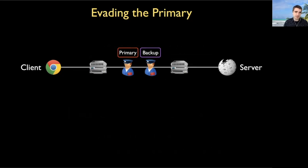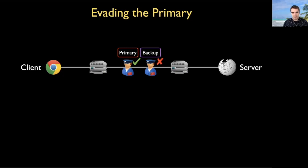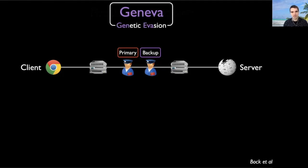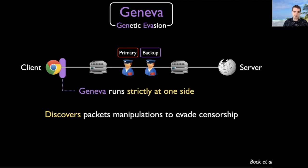We could try to evade both middleboxes and find packet sequences that defeat them both — and we actually did do this in the paper. As of right now, anyone can take those strategies, use our open source tooling, and defeat the HTTPS censorship from the client. But we wanted to take this a step further to study the backup middlebox in isolation. To do this, we use a tool called Geneva, which stands for genetic evasion. Geneva is a genetic algorithm that we developed that discovers ways to manipulate an existing packet stream from only one side of the connection to evade censorship, first developed in 2019. For this work, we modified one of Geneva's fitness functions to ignore the effects of the backup and tailored its training so it would exclusively be looking at the primary — allowing us to find strategies that defeat the primary without evading the backup.